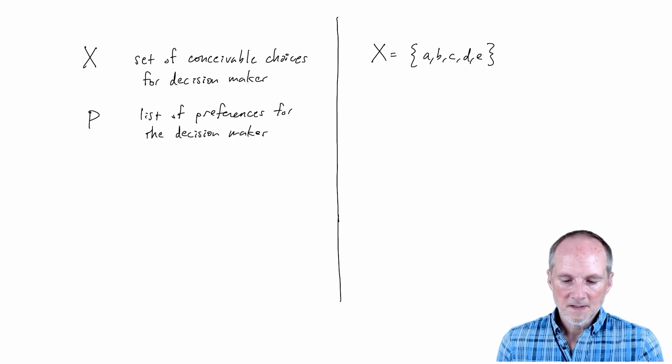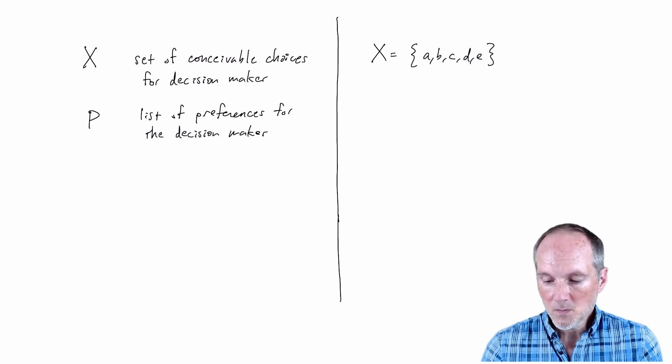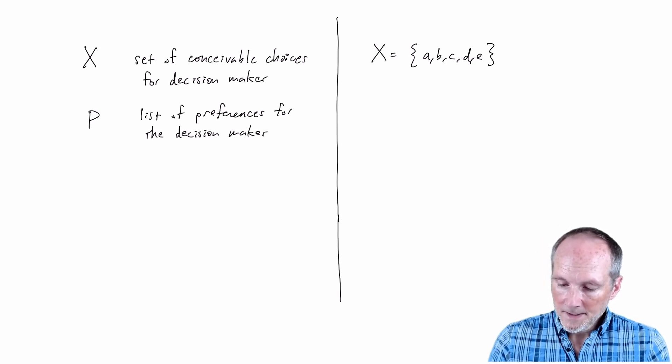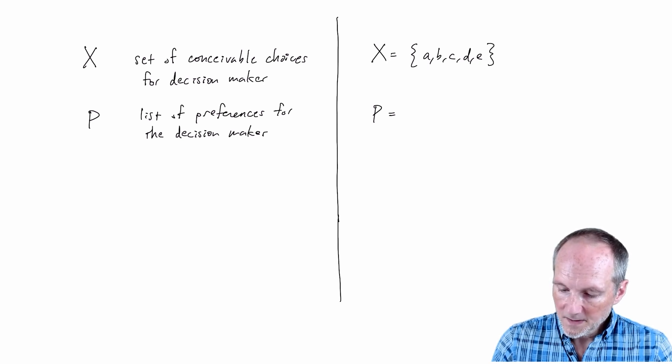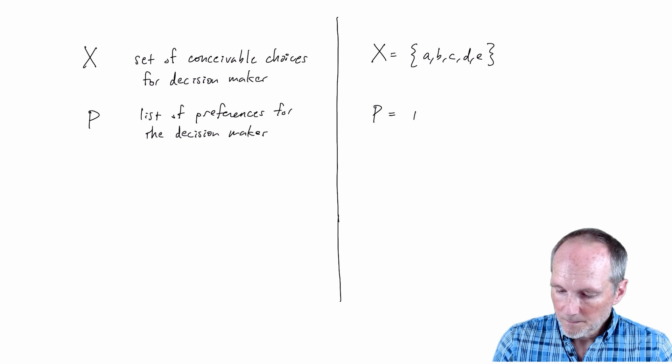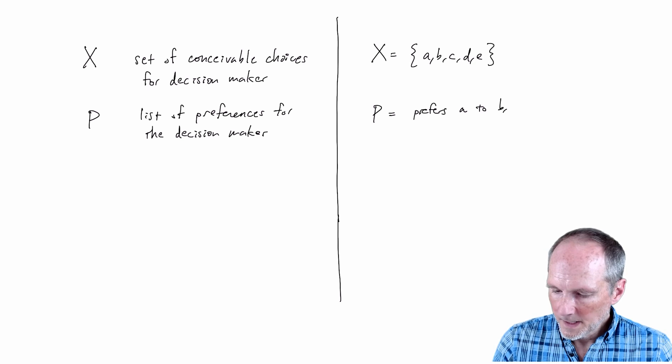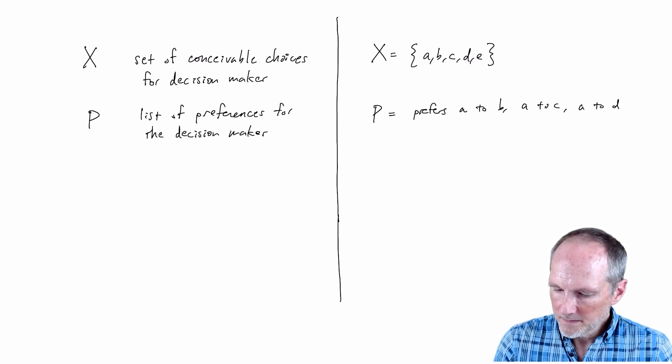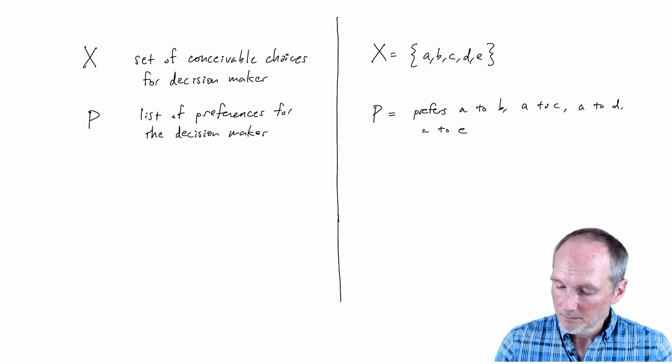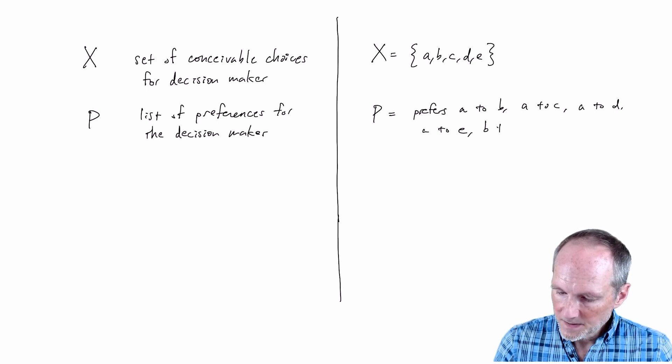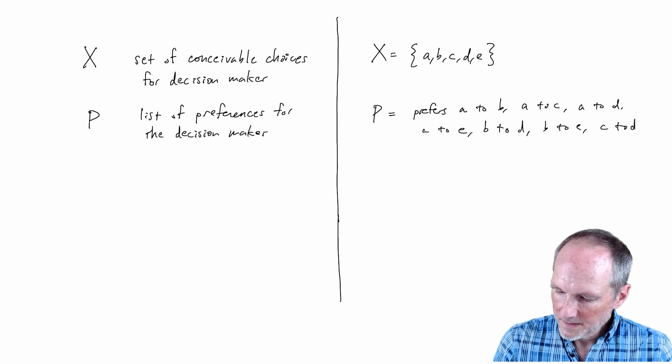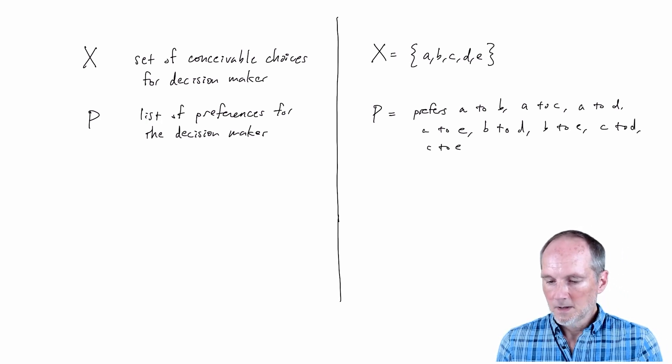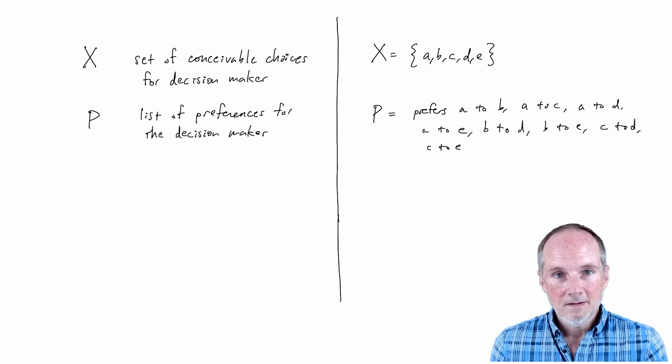And I'm going to use P for that list P for preference and over here in my little example with the five conceivable choices. Let's say the decision maker prefers a to b, a to c, a to d, a to e in other words prefers a to everything, prefers b to d, b to e, c to d and c to e and that's it all right that's a long list and that was kind of a pain.